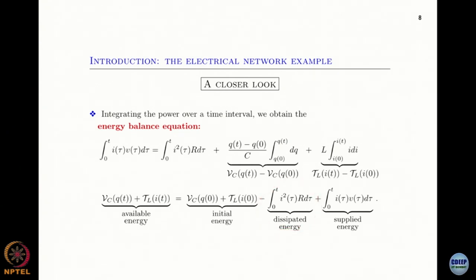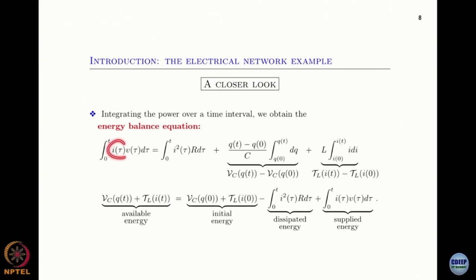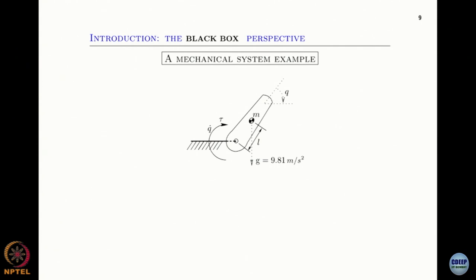What I can pull out of my circuit at any moment equals what was there in the beginning, minus what was dissipated, plus what I supplied. Importantly, passivity depends on the choice of input and output — basically any real system has some input-to-output map with this passivity property. Another typical engineering example of a passive system is a pendulum.